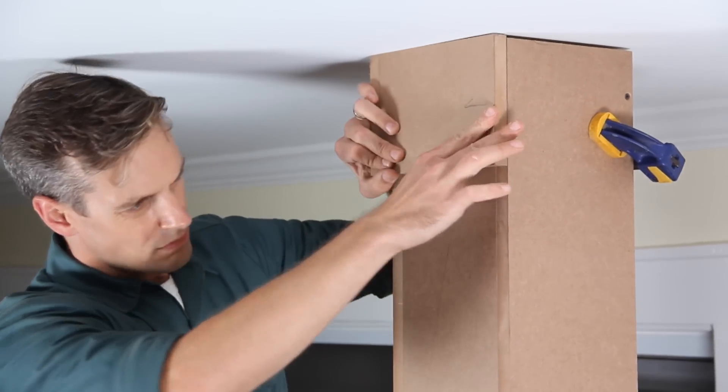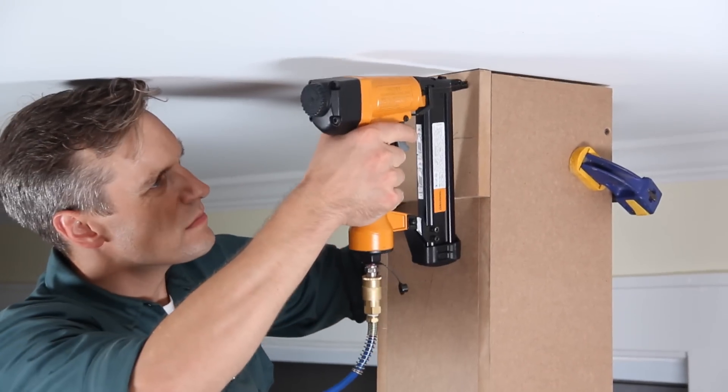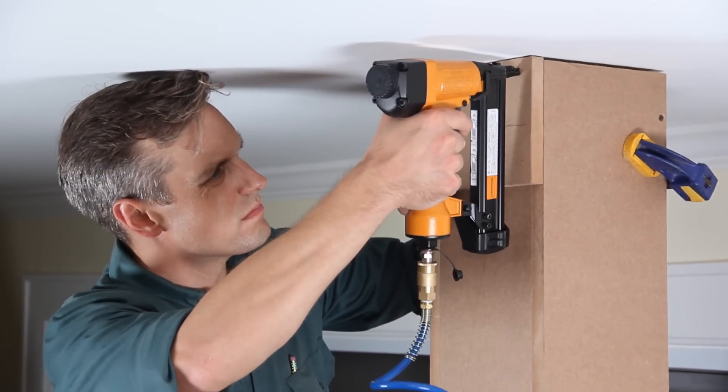You're going to finish up the piece by installing all the trim. Starting at the top, measure and cut pieces of MDF to add a capital to the column.